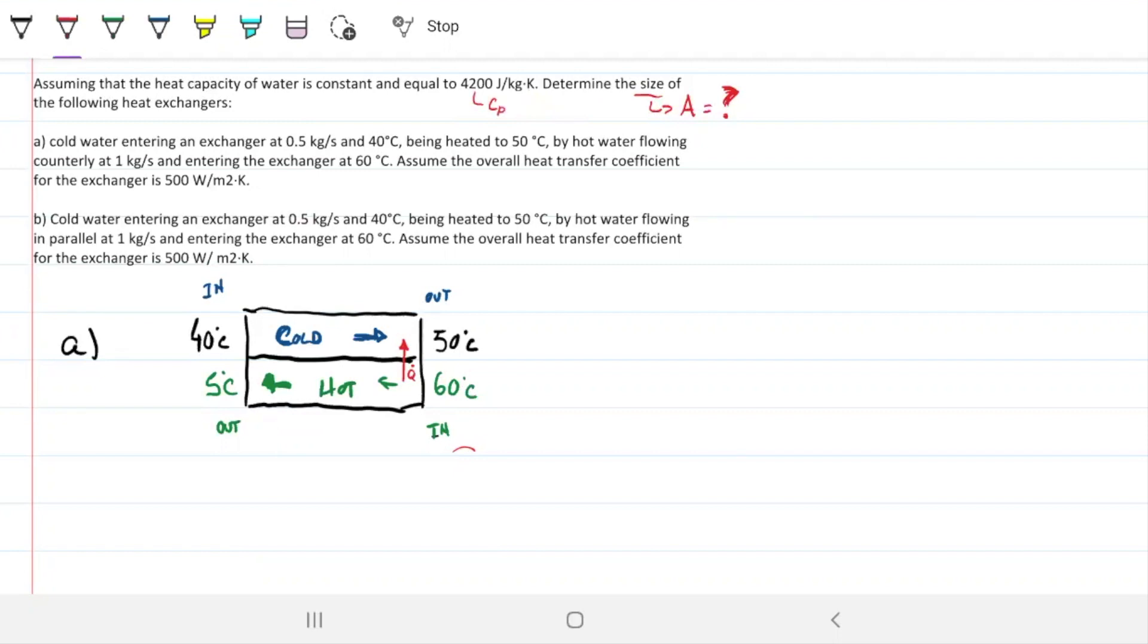Part A: cold water entering an exchanger at 0.5 kg/s and 40°C being heated to 50°C by hot water flowing countercurrently at 1 kg/s and entering at 60°C. Key word here is countercurrently, so that's saying counter flow as opposed to parallel flow.